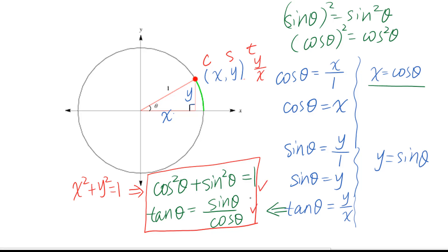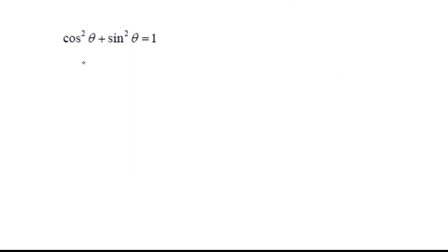In the future we will use these a lot. Let's talk about cosine squared theta plus sine squared theta equals 1. This trig identity shows the relationship between cosine theta and sine theta. If you are given sine theta, you can get cosine theta through this trig identity.